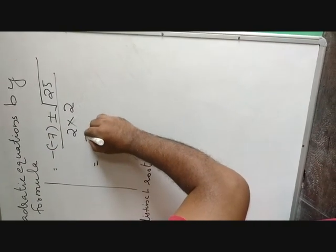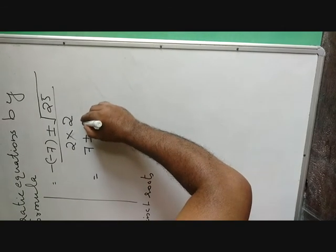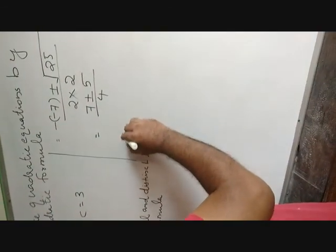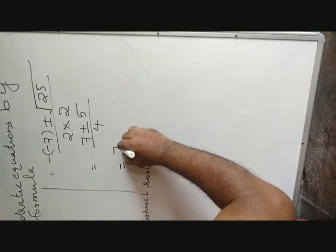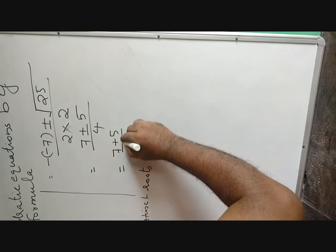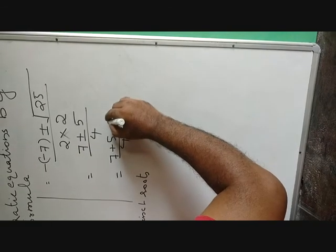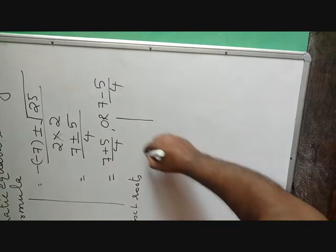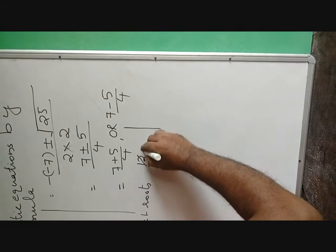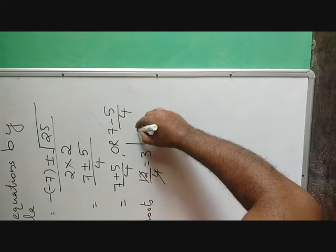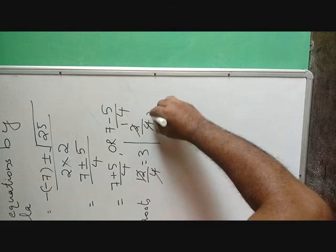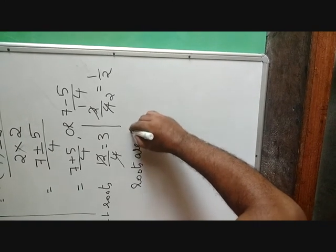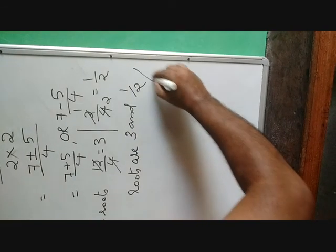That is equal to 7 plus or minus 5, divided by 4, since the root of 25 is 5. That gives us 7 plus 5 by 4, or 7 minus 5 by 4. So 12 by 4 equals 3, and 2 by 4 equals 1 by 2. The roots are 3 and 1/2.